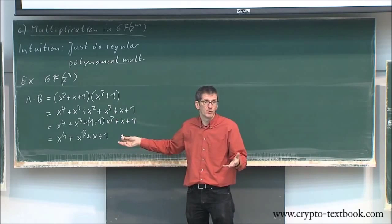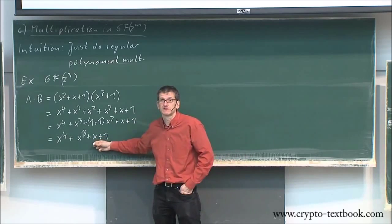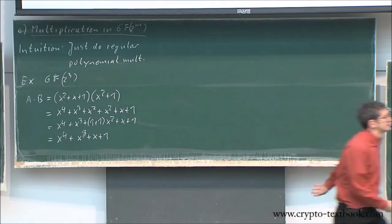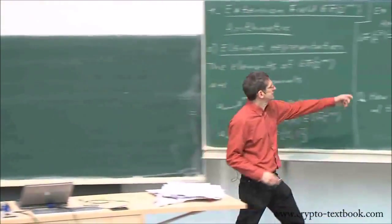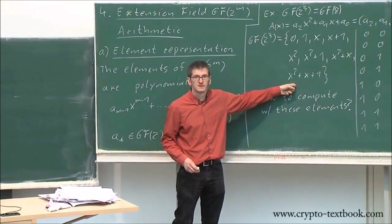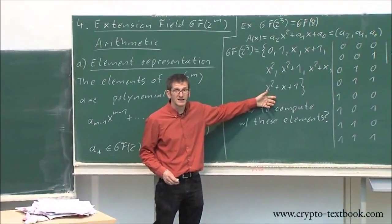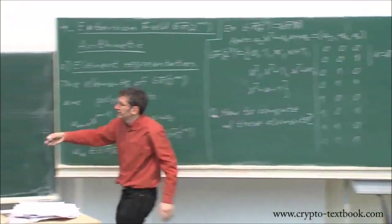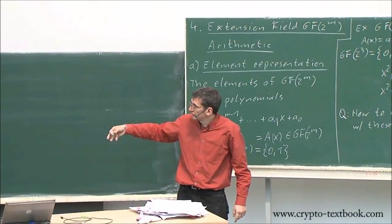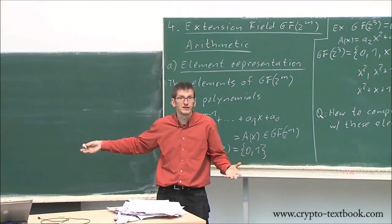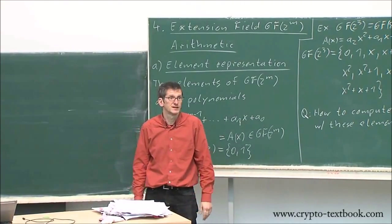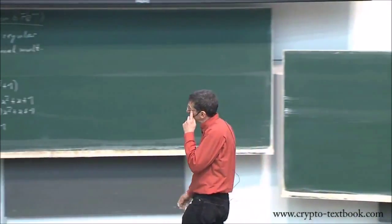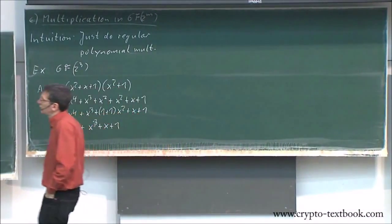Where's the problem? Why is this not the correct result? It's not in the field. The field stops here — eight elements. x to the fourth plus x cubed plus x plus one is not in the field, so we have a problem. This is why multiplication is complicated in finite extension fields.